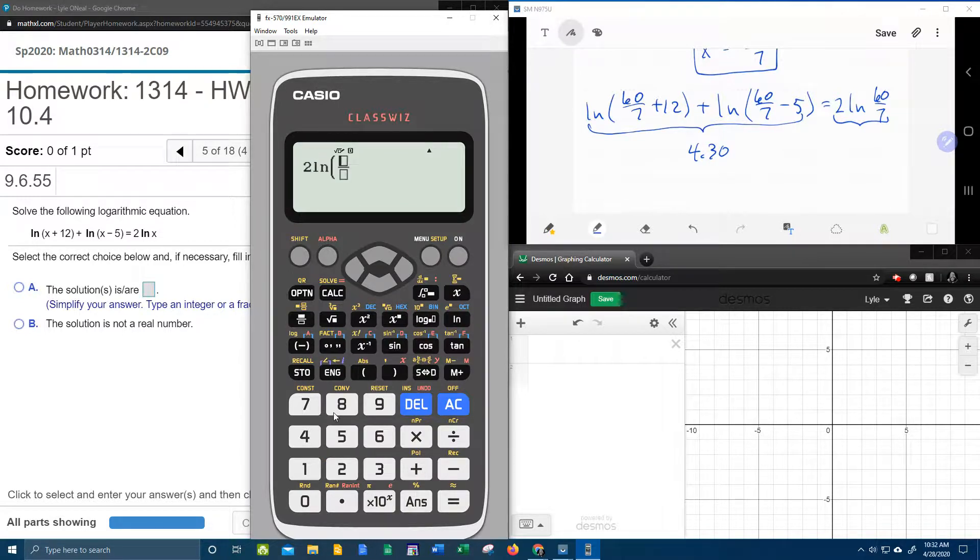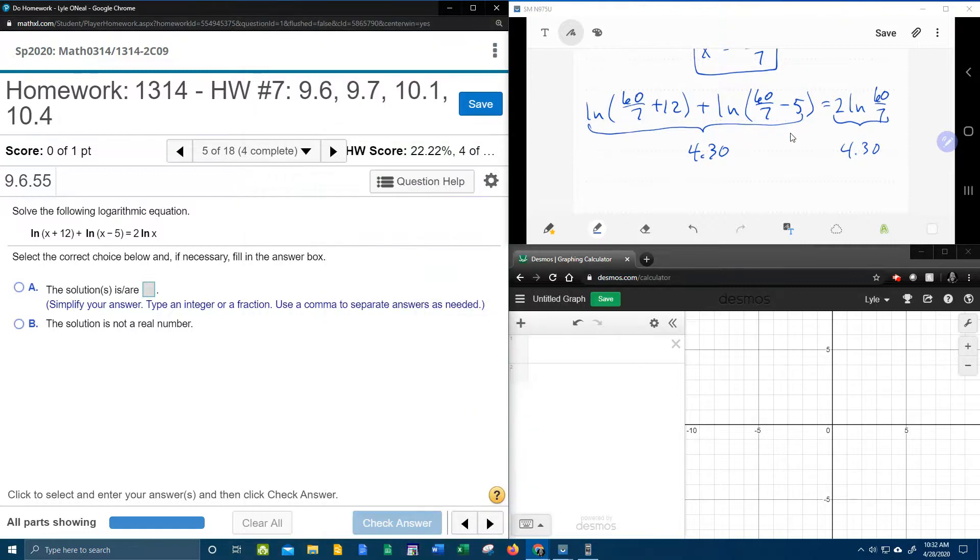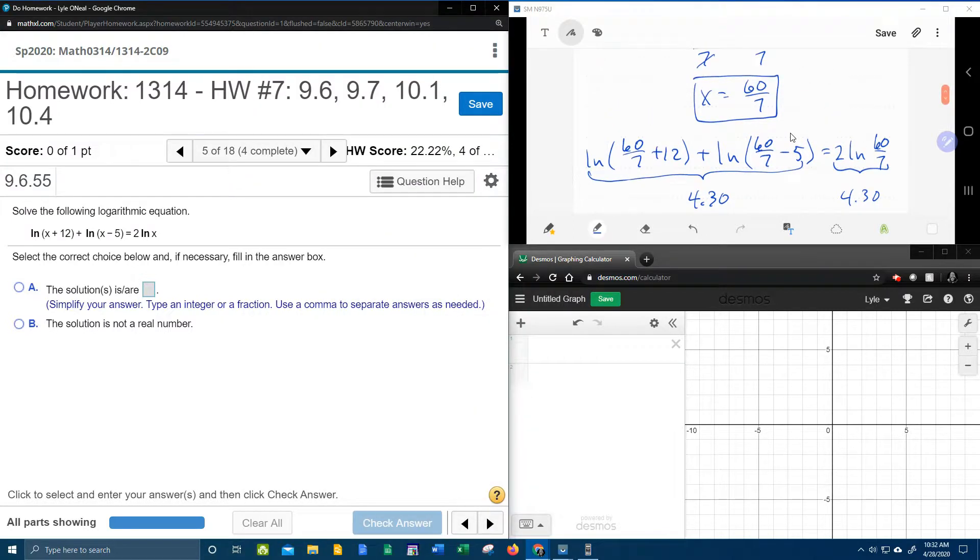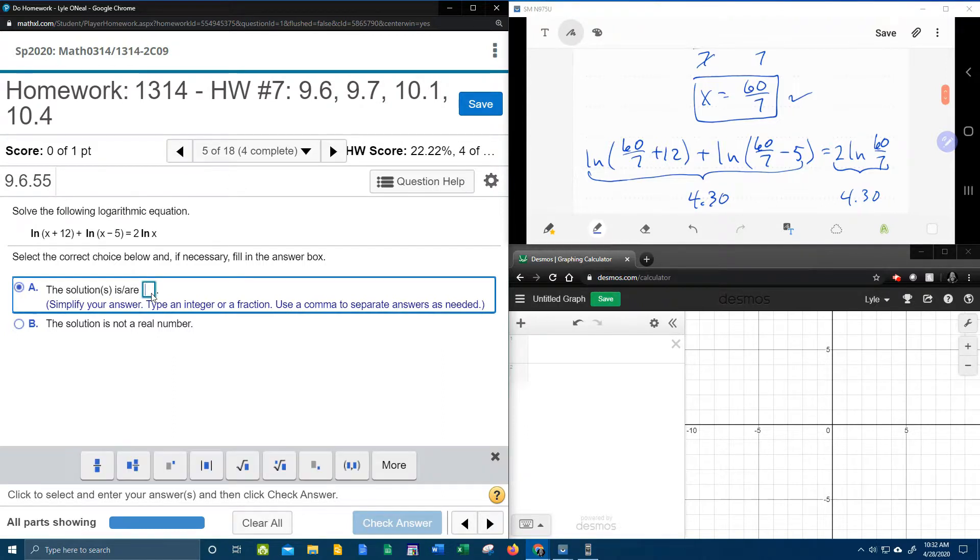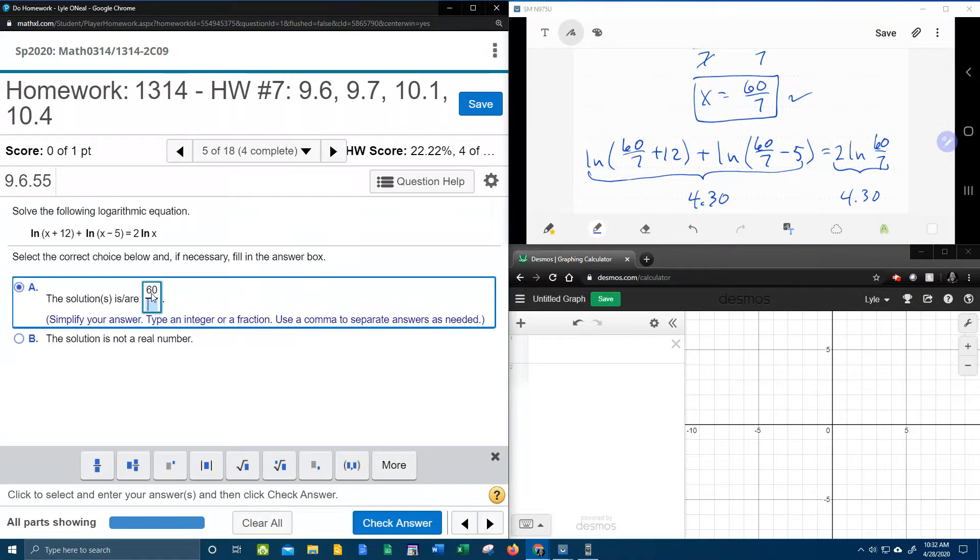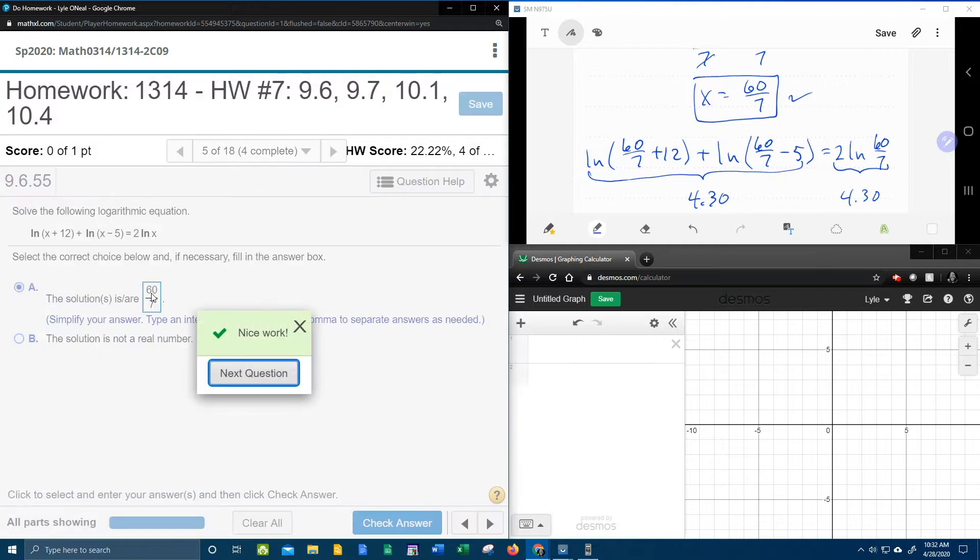So 2 natural log 60 over 7. Fingers crossed. Oh, look at that. 4.30 rounded. So that's the same thing. So that verifies that my work is correct and that the answer really is 60 sevenths. Now let's see if my lab math agrees. 60 sevenths. Bam!